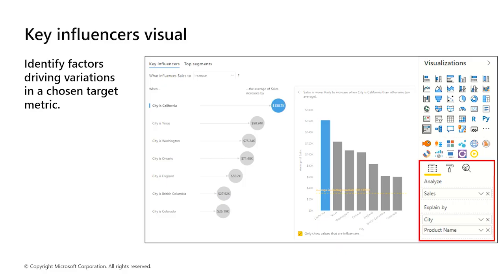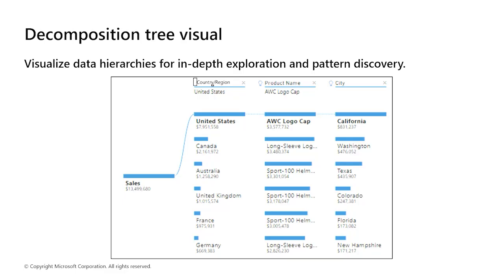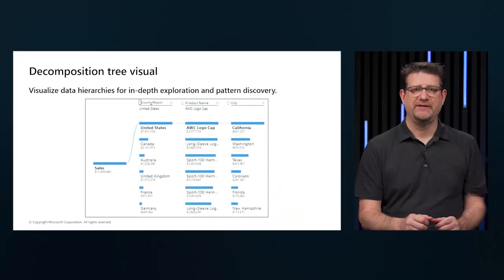The decomposition tree is an AI visual used for improvised exploration and conducting root cause analysis. In this example, the current visuals for the supply chain team do not answer all the team's questions. In particular, the team wants to analyze the percentage of products that the organization has on backorder or out of stock. The decomposition tree visual can help accomplish that task. Let's go to Power BI and see this in action.